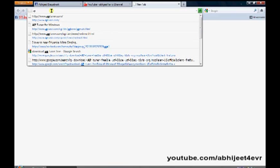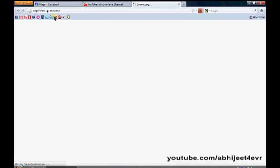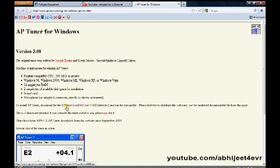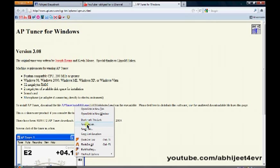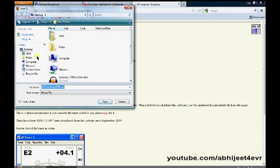The website URL is aptuner.com. You can check the description box below to get the URL and there you'll find a link which says download the file aptuner install 308.exe. Right click on that and save link as. You'll be asked to save the exe file. Save it on your desktop.